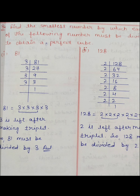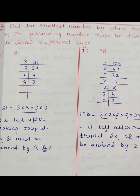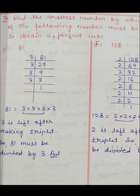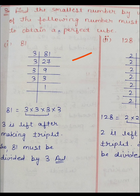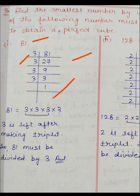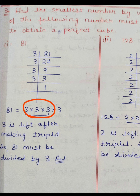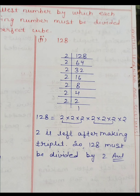Question number 3: Find the smallest number by which each of the following numbers must be divided to obtain a perfect cube। अब बताना है कि किस number से divide करने पर perfect cube बनेगा। Process वही है — prime factorization करेंगे, triplets बनाएंगे — लेकिन जो extra number बचेगा triplet के बाद, उसको divide करना है। 81 के prime factors में 3 आया 4 times। एक triplet complete, 3 extra बचा। 3 is left after making triplet, so 81 must be divided by 3।